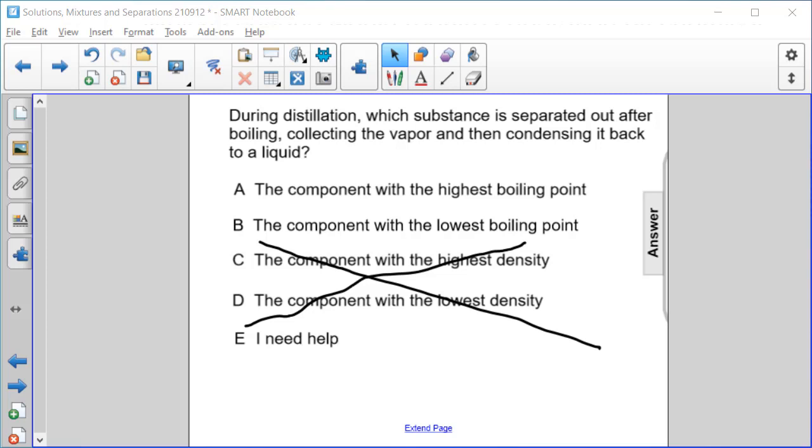into the liquid, right? So we get the substance with the lowest boiling point out first. And then as you continue to increase the temperature, you could get the next substance if there were more. So the answer here is B.